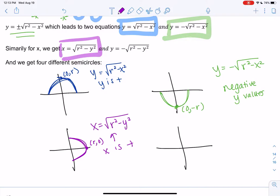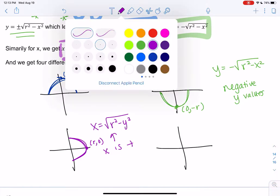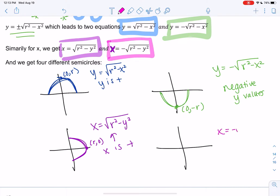So basically, the y semicircles are up and down. The x circles are left and right. Let's do, and then, oops, I made a typo here. This should be x. I'll fix that. So x equals negative square root r squared minus y squared. So this is when x is negative. And so x is always negative on the left side. So that'll be this side of the circle.